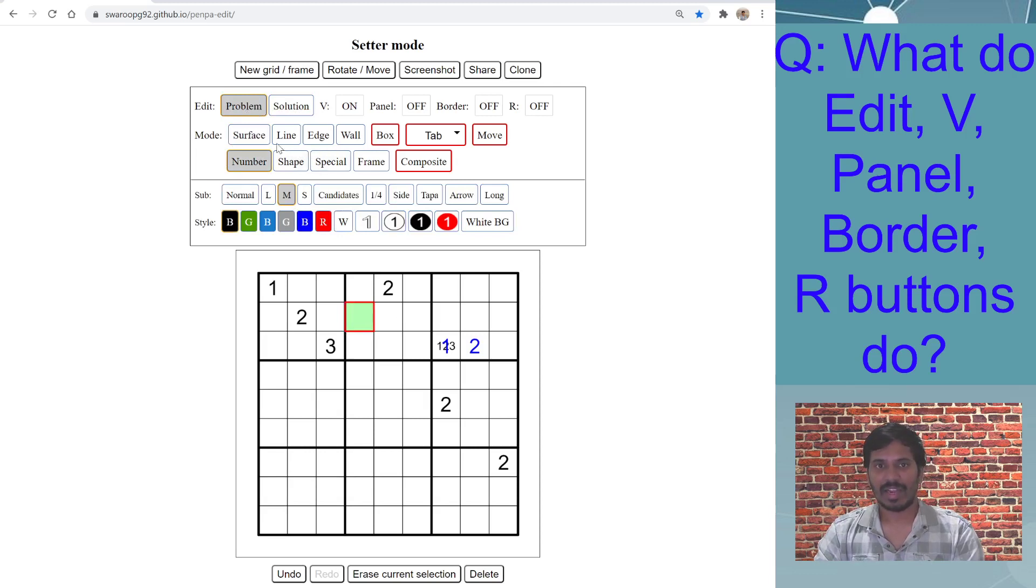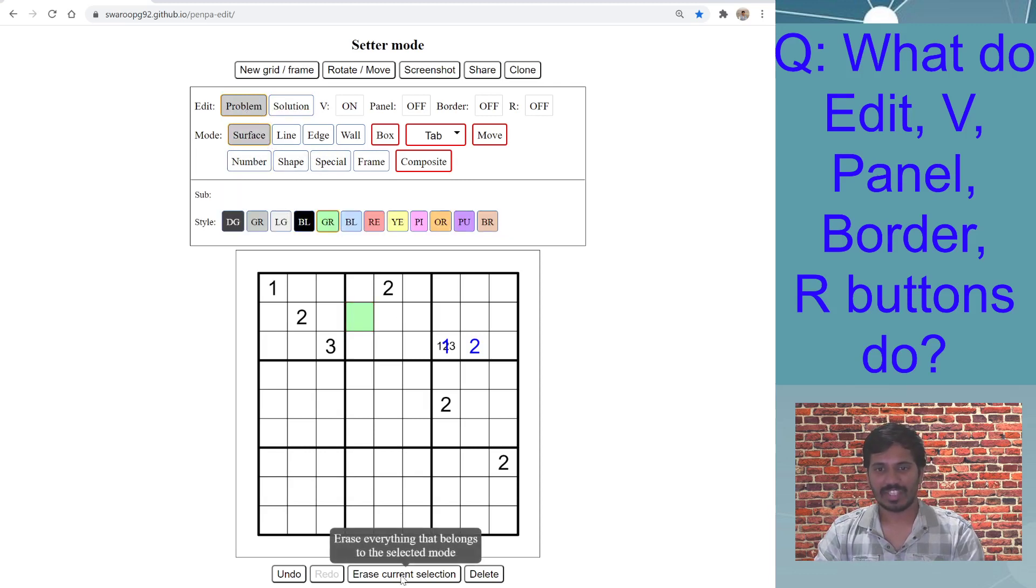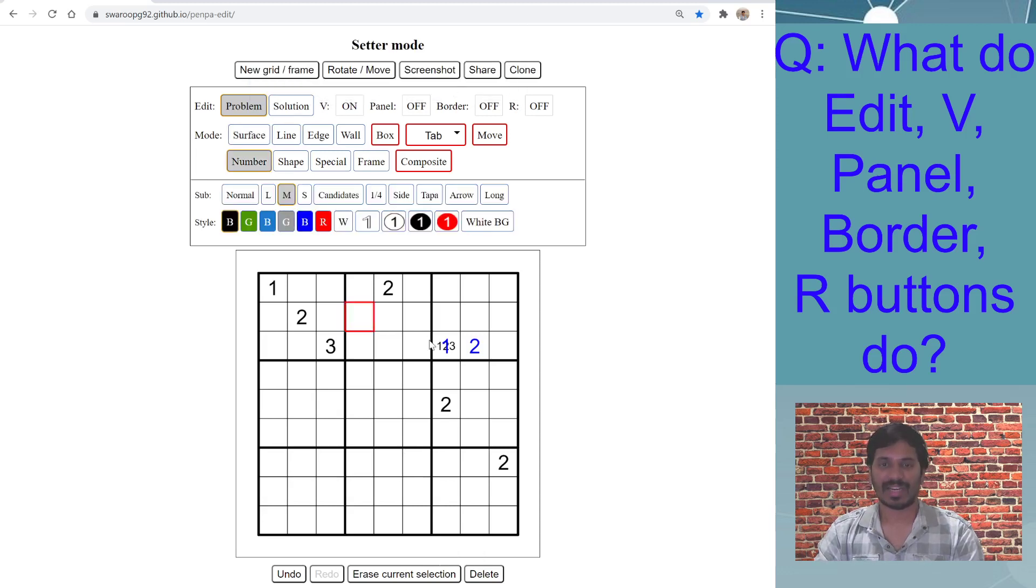Let me erase this shading, so I used remove all shading, back to number mode. Now as a creator, I add this clue, and I go to the Solution mode and I try to solve the Sudoku as I create.